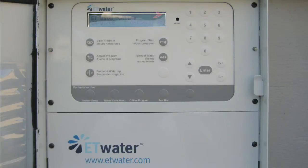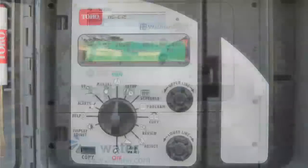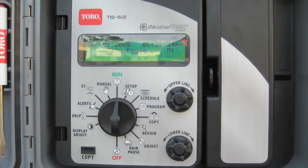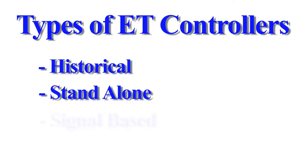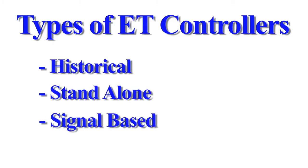There are many different brands of ET controllers, but almost all of them work in different ways. It is important to understand the differences between how the controllers work to select the one that best suits your landscape. There are three basic types of ET controllers: historical, stand-alone, and signal-based.